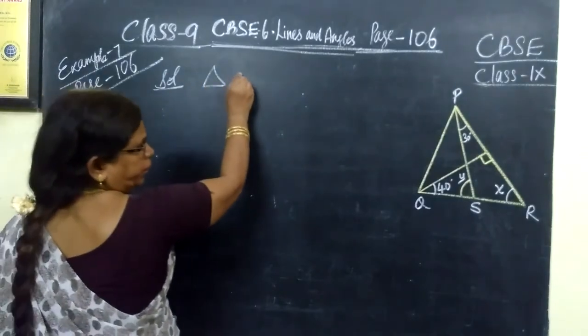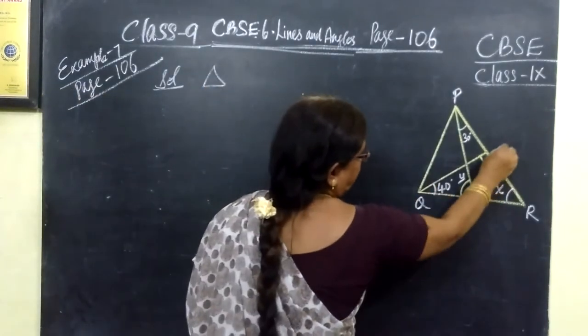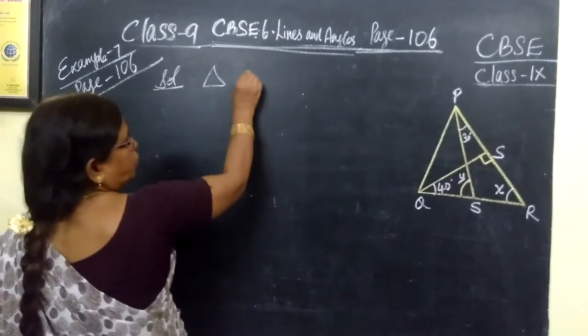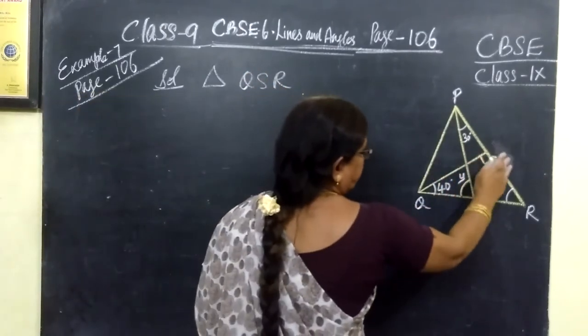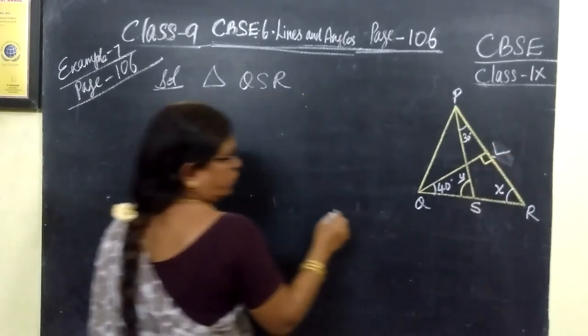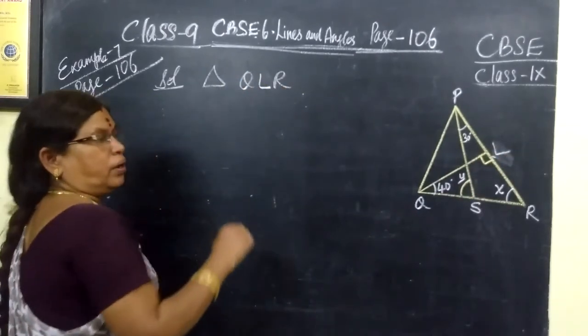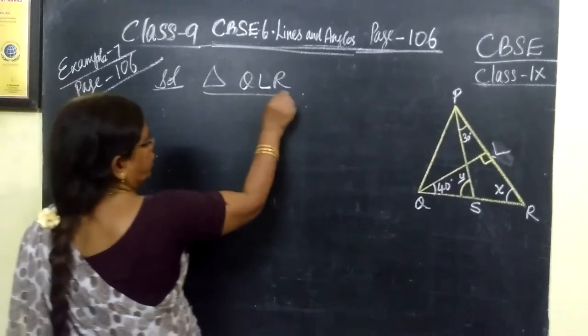Consider the triangle PQR. S is on QR, L is also marked. We'll consider triangle QLR.